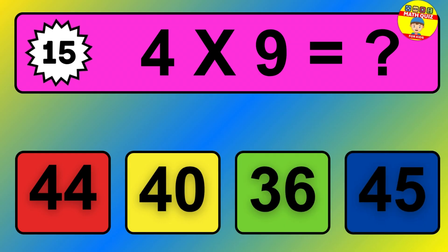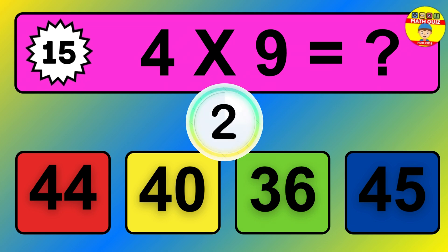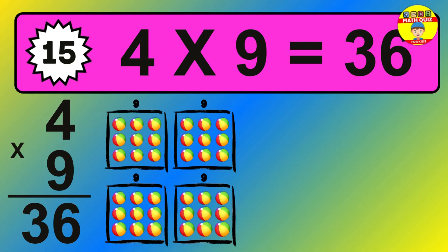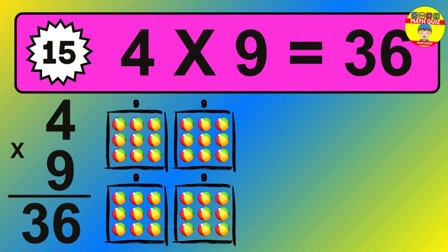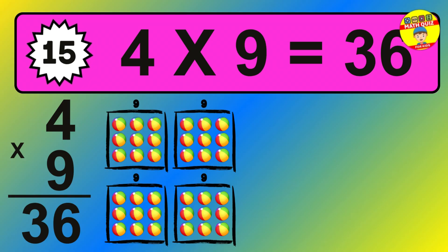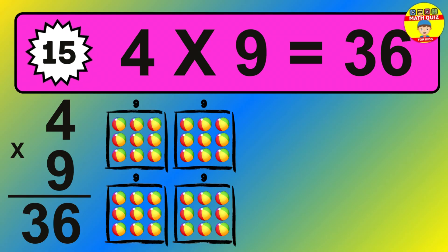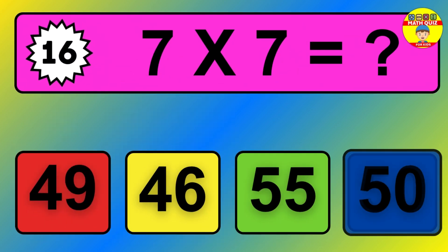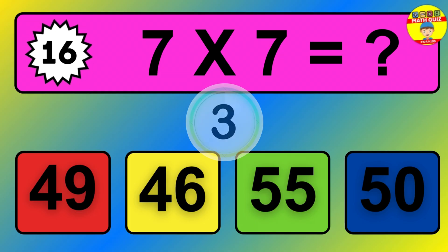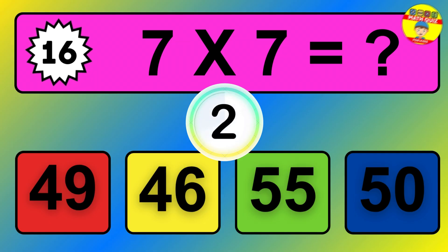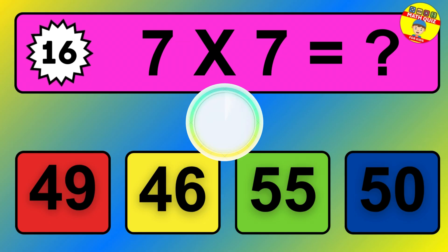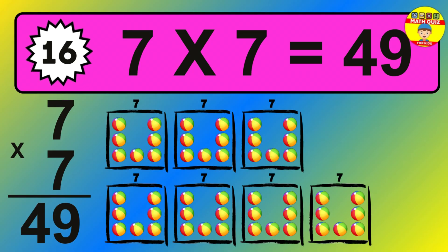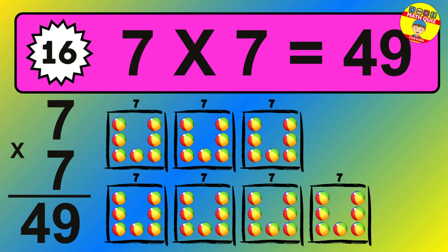Question 15. 4 times 9 equals what? The answer is 4 times 9 is 36. To calculate, we have 4 groups with 9 balls each one. So how many balls do we have? 36 balls. Question 16. 7 times 7 equals what? We have 7 groups with 7 balls each one. So how many balls do we have? 49 balls.